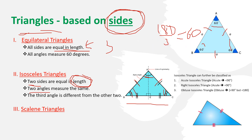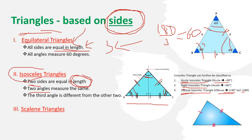Isosceles triangles can be further classified based on angles. If all angles are less than 90 degrees, we call it an acute isosceles triangle. If one angle equals 90 degrees, it's a right isosceles triangle. If one angle is more than 90 degrees, it's an obtuse isosceles triangle. This sub-classification is not possible for equilateral triangles, because their angles are always fixed at 60 degrees — so an equilateral triangle is always acute.